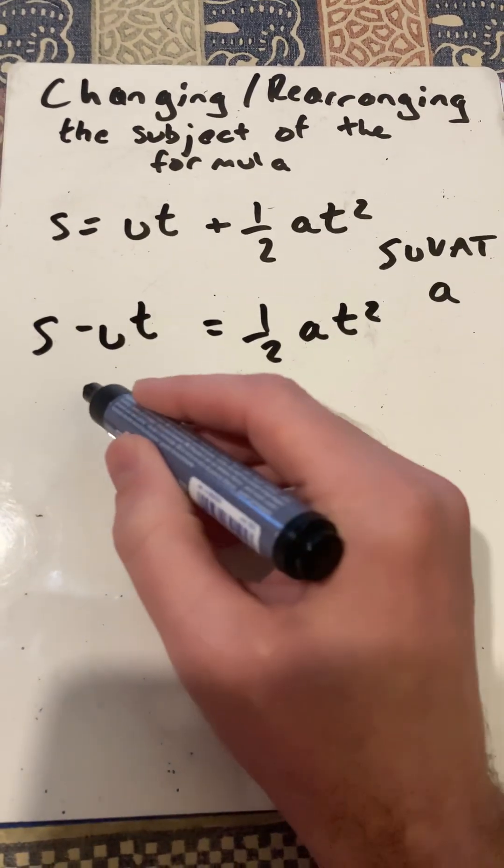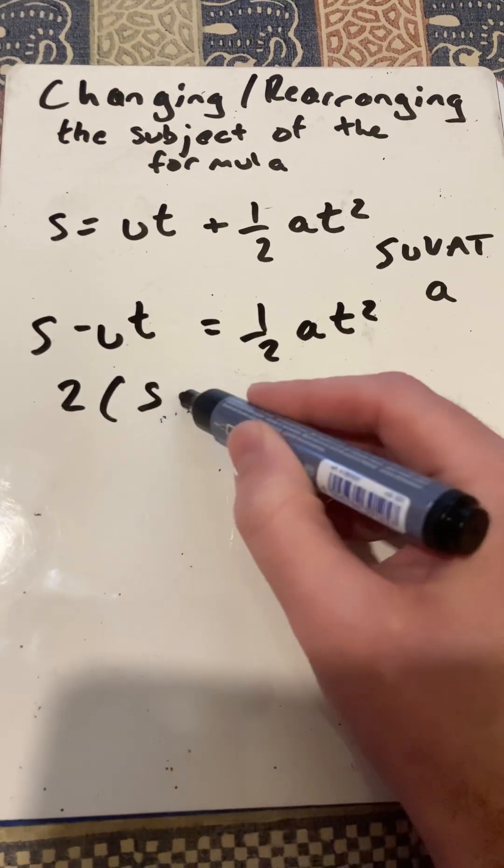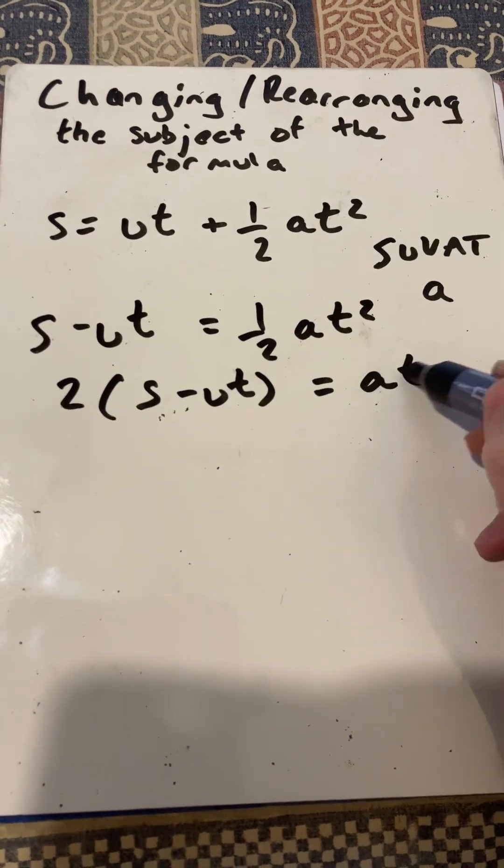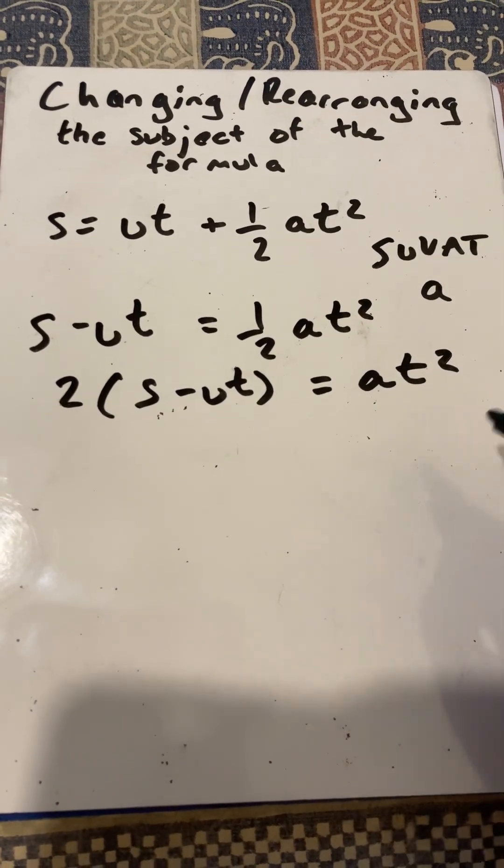Then I'm going to multiply through by 2. And then lastly, I'm going to divide through by T squared.